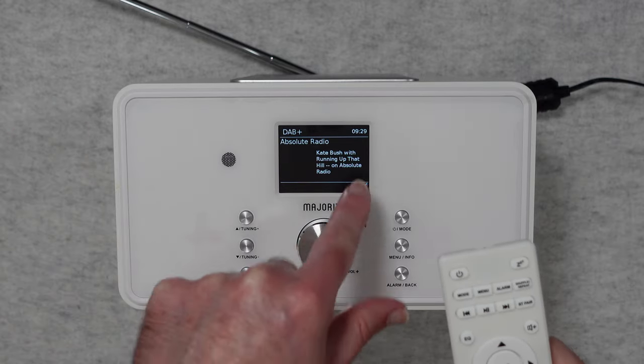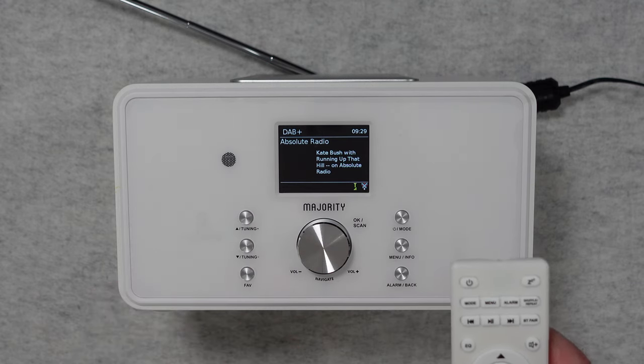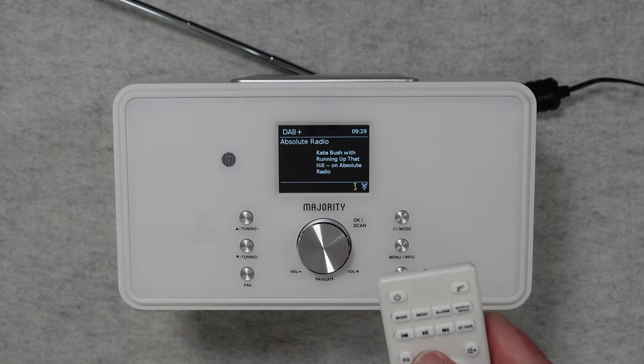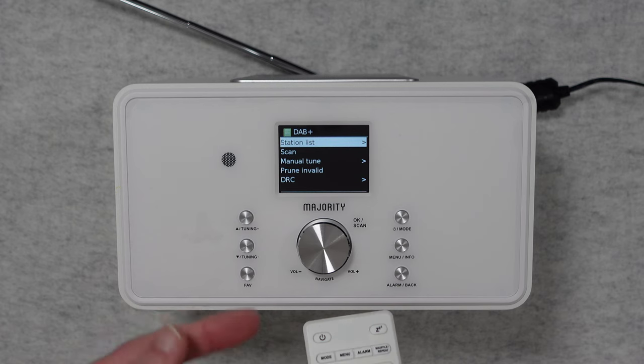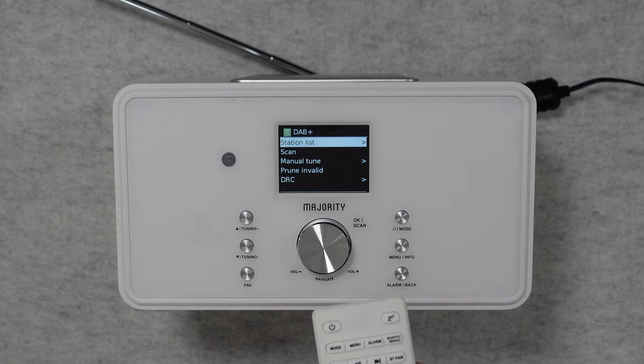The interface, this little tiny screen here, is also very good. We're on DAB radio at the moment. It's showing the radio station and the current track that's playing. I can also go through the menu system. I can get up a station list. I can scan. I can do a manual tune. So many different features.